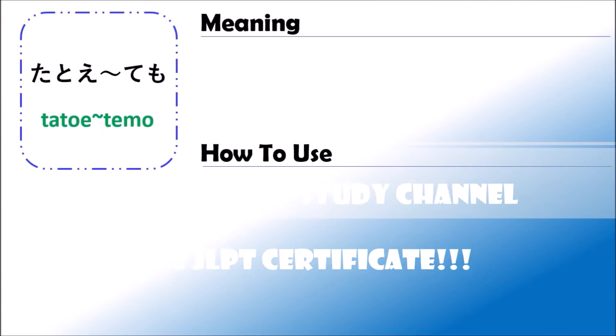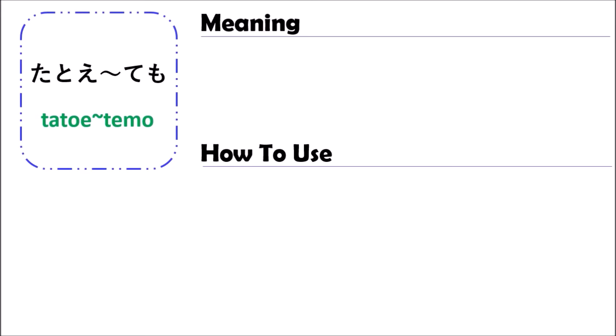The grammar of たとい何々でも. The grammar of たとい何々でも means 'even if something is the case.'